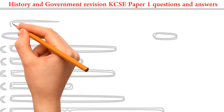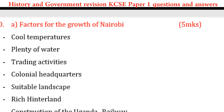Good afternoon, our listener. Welcome to our video today. We are doing a revision — this is History and Government Paper One. KCSE Paper One deals with Kenyan history. Question number one: you are told to state factors for the growth of Nairobi.